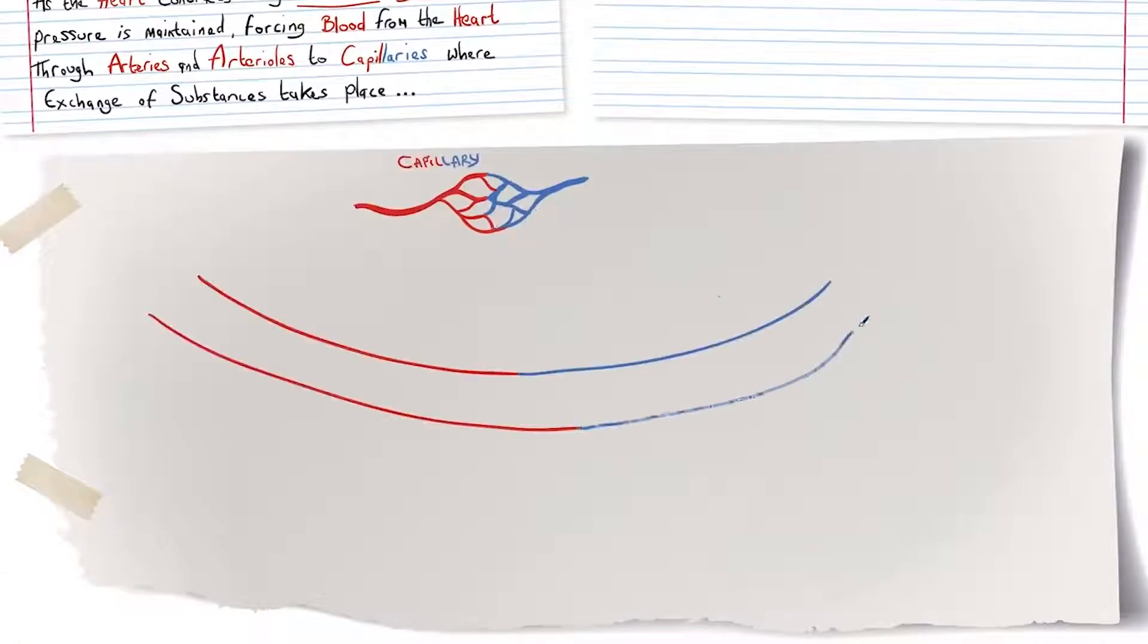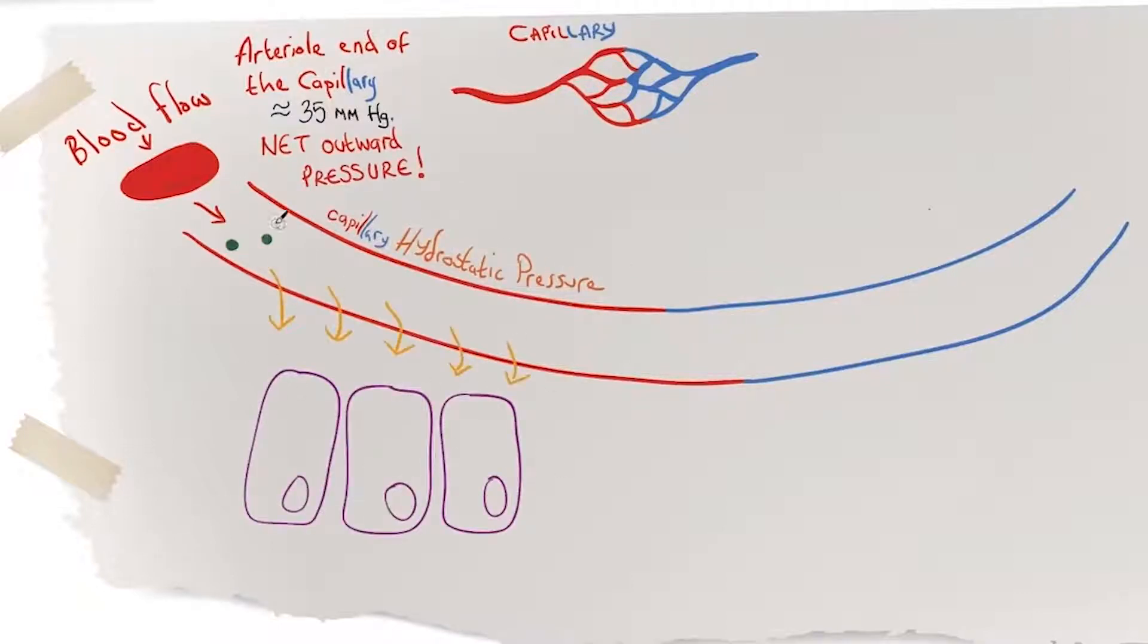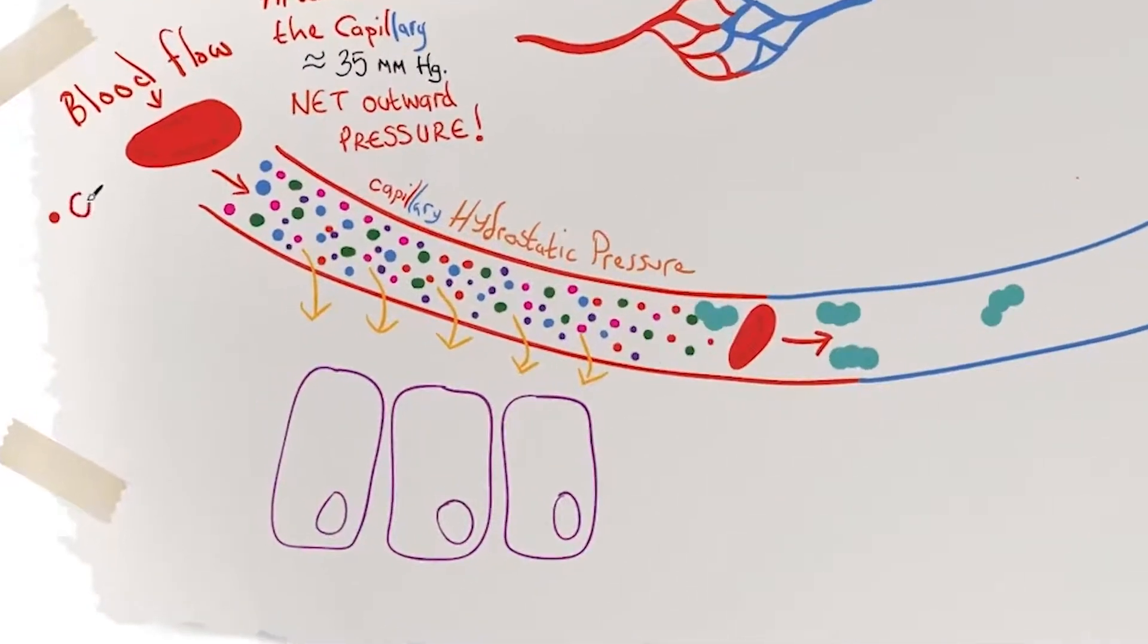Here I have my capillary and the blood will flow through the arterial end of the capillary which has a pressure of about 35 milligrams of mercury. So there is a net outward pressure and this capillary hydrostatic pressure which is exerted upon the walls of the capillary bed is responsible for forcing out solutes and fluids such as oxygen, molecules of water,